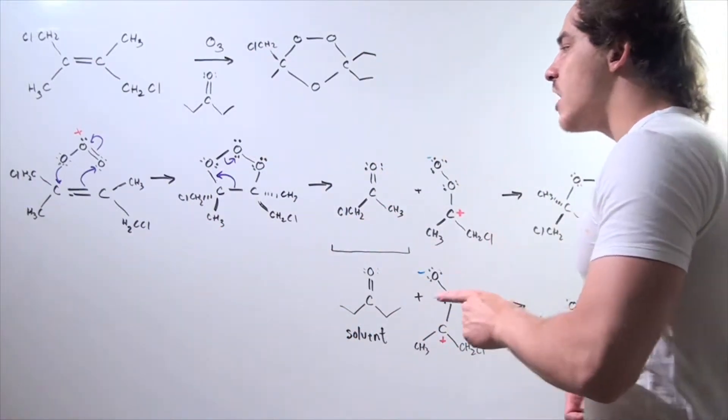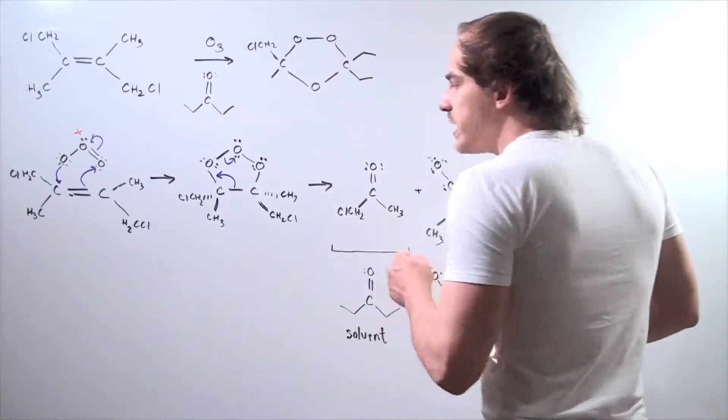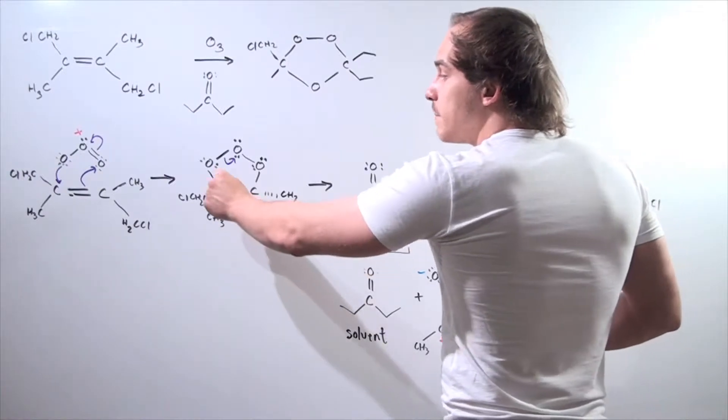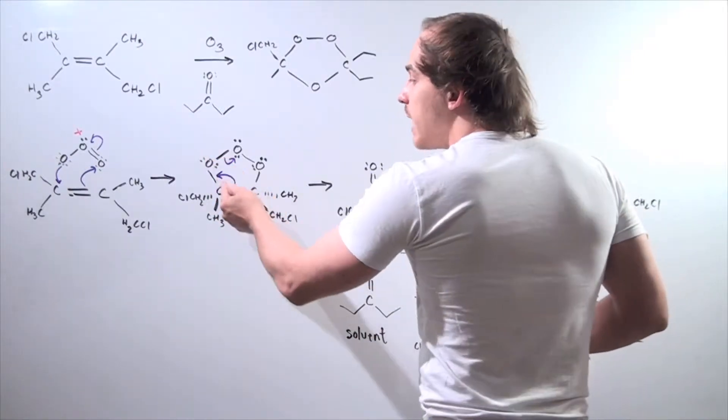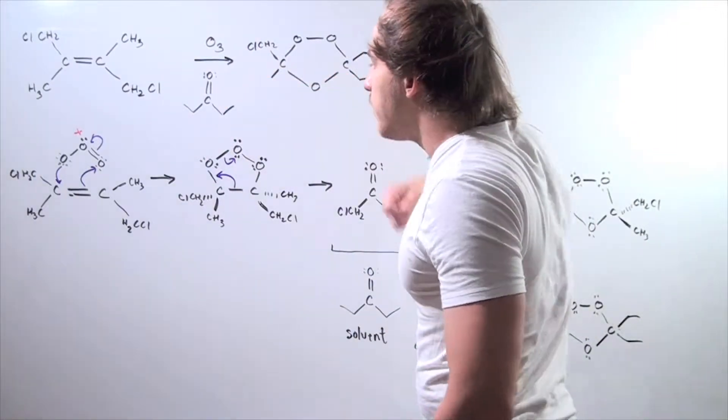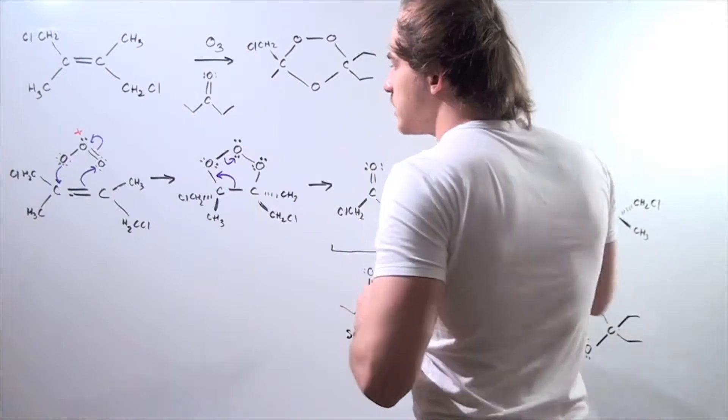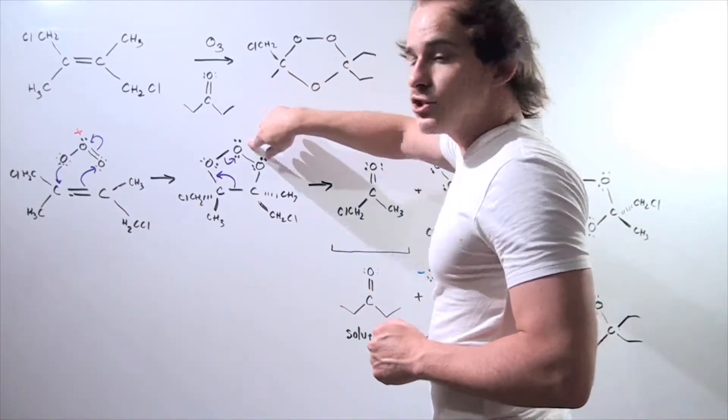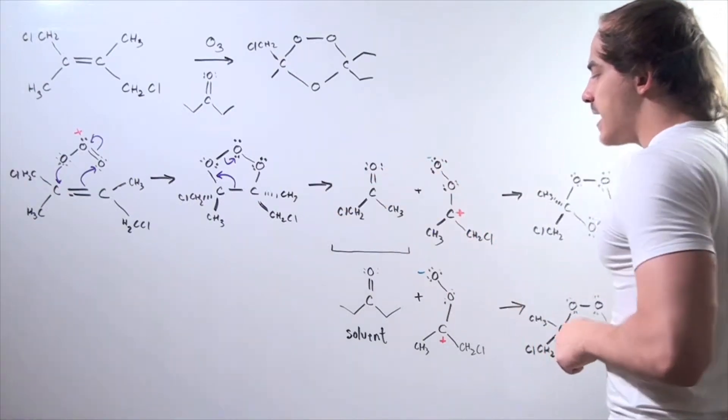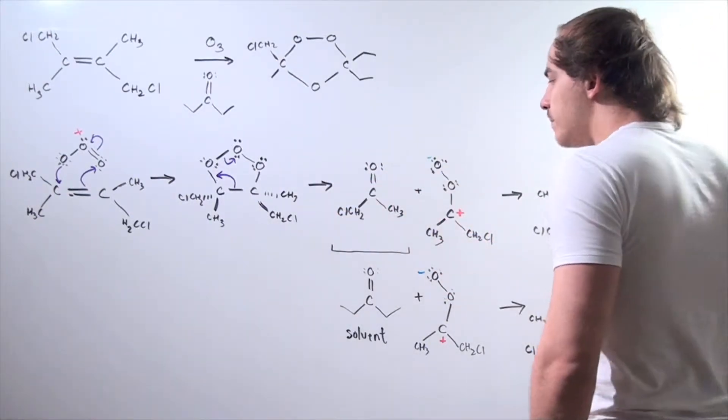In the second step, we have our reverse 1,3-dipolar reaction taking place. We have this double bond or this sigma bond break. The pair of electrons form a pi bond between the carbon and oxygen, kicking off this sigma bond between our oxygen and oxygen, and the lone pair of electrons finally goes on to this oxygen, and we form the following two intermediate compounds: the carbonyl oxide and the carbonyl compound.